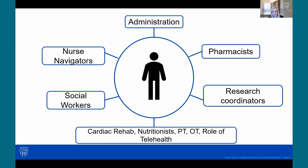An amyloid center of excellence and a true interdisciplinary team involves more than just medical subspecialists. In order for everything to work, there has to be support from the administrative team, a referral and triage system, nurse navigators, pharmacists to help with the complicated medical therapy and prescription process, social workers, research coordinators, cardiac rehab, nutritionists, PT/OT, and also evaluating and utilizing the expanding role of telehealth.